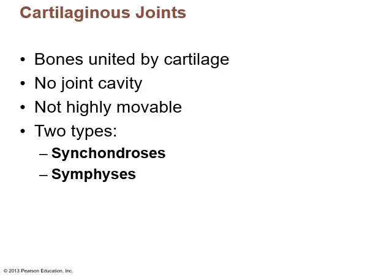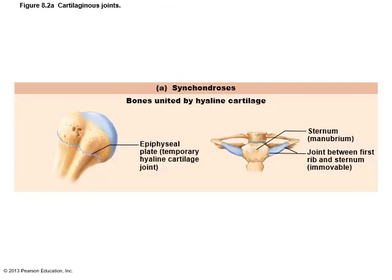The two types are synchondrosis and symphysis. Remember, chondra means cartilage. A synchondrosis is a type of cartilaginous joint where bones are joined together by hyaline cartilage — that's what makes it a synchondrosis.